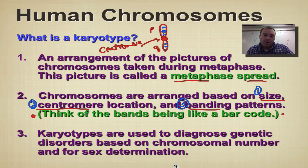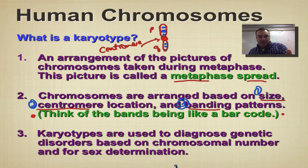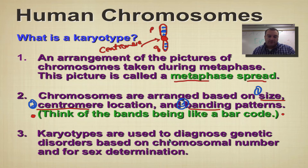Chromosome number one is the biggest, and chromosome number 22 is smaller. They're arranged by size — the lower the number, the bigger they are; the larger the number, the smaller they are.